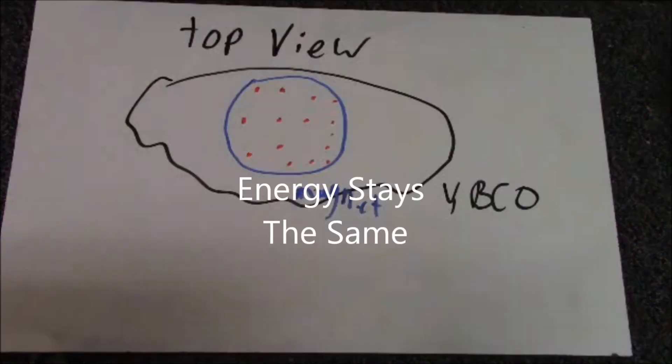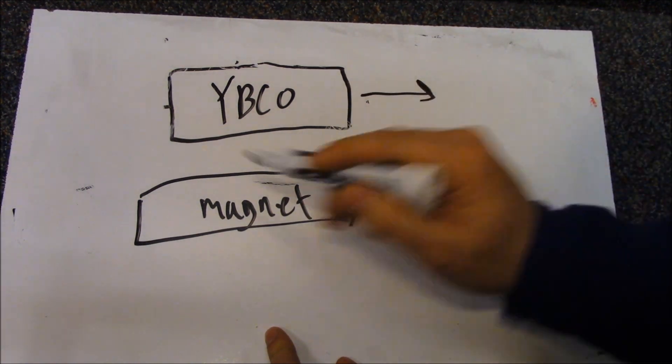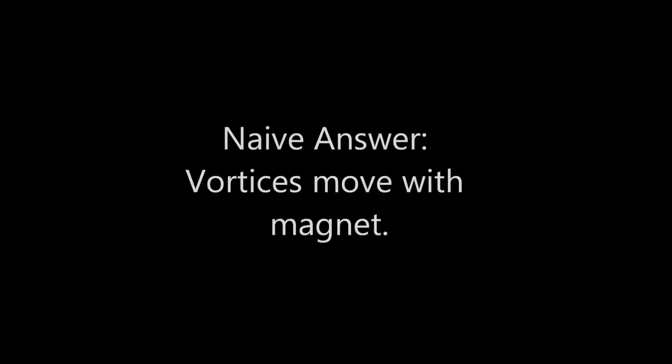If the vortices move with the magnet, the energy is going to stay the same, and we can move the YBCO freely. Since the lower energy state is more favorable, the naïve answer is that vortices move with the magnet, and don't lock the YBCO to the magnet.